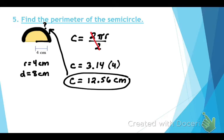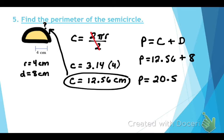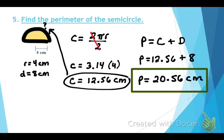My instructions said to find the perimeter, not just the circumference. So I also have to add the bottom part of that semicircle, which is the diameter — and you just told me that's 8. So we take the circumference 12.56 plus the diameter 8, and the total perimeter is 20.56 centimeters. Any questions on how to find the perimeter of a semicircle?